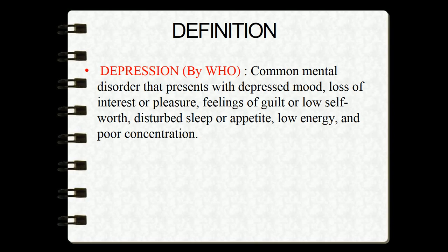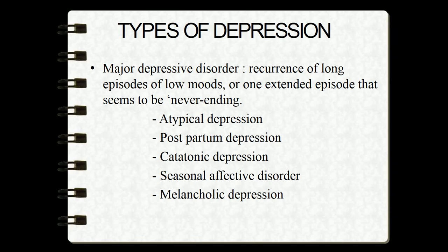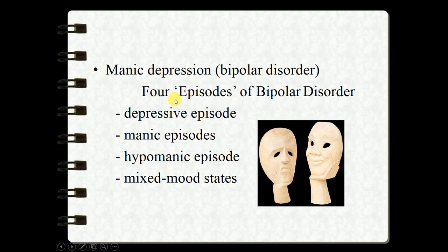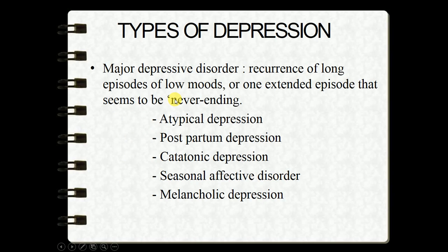Types of depression can be divided into different categories. The first is major depressive disorder, which is the recurrence of long episodes of low mood or one extended episode that seems never-ending. It is further classified into atypical depression, postpartum depression, catatonic depression, seasonal affective disorder, and melancholic depression.